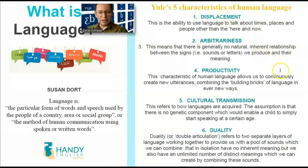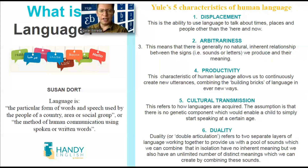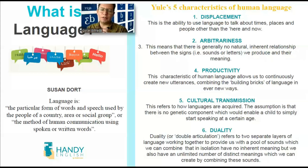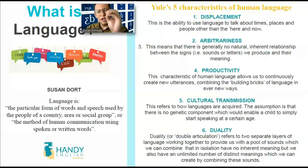Then we have arbitrariness. This means there is generally no natural inherent relationship between the signs we produce and their meaning. Basically, we're talking about writing. In some languages we use some letters or cryptographics — just like Japanese or Chinese with their symbologies — and that will mean something for the people who speak that language, but it doesn't mean anything for the people who speak languages like English or Spanish. If we take a look at the Hebrew language, we see that the alphabet has concepts instead of letters. So this is called arbitrariness — the ability to attach meaning to a cryptographic.